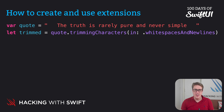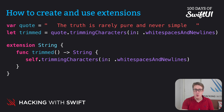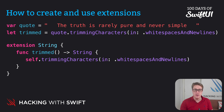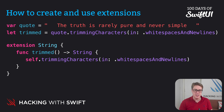We could say there's an extension on String with a new method called trimmed that returns a String. Notice the extension keyword to start the extension, then the type name — which one we're extending — this is on strings. We open a brace and of course the matching closing brace, and all the code inside there is part of our extension, added to the String type.